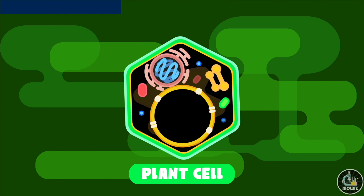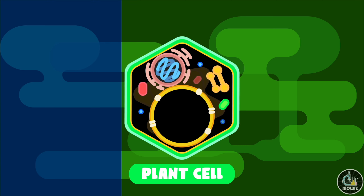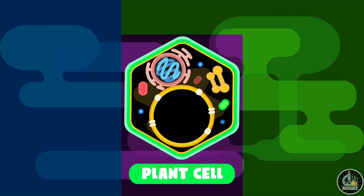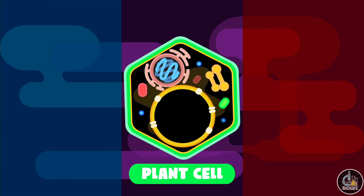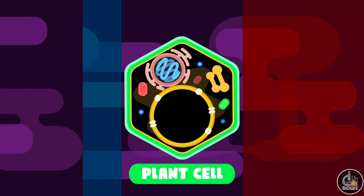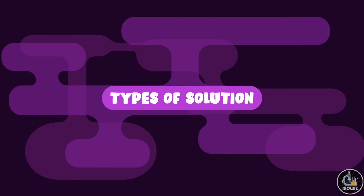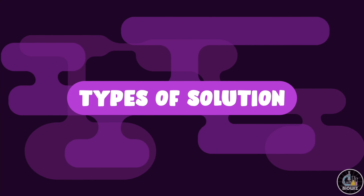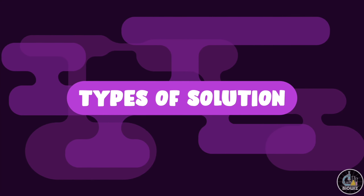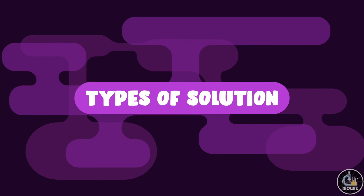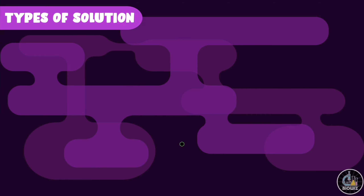In this video you will learn what happens when a plant cell is exposed to different surrounding conditions with respect to concentration. First, let's understand what are the different types of solution to which we are going to expose our plant cell.